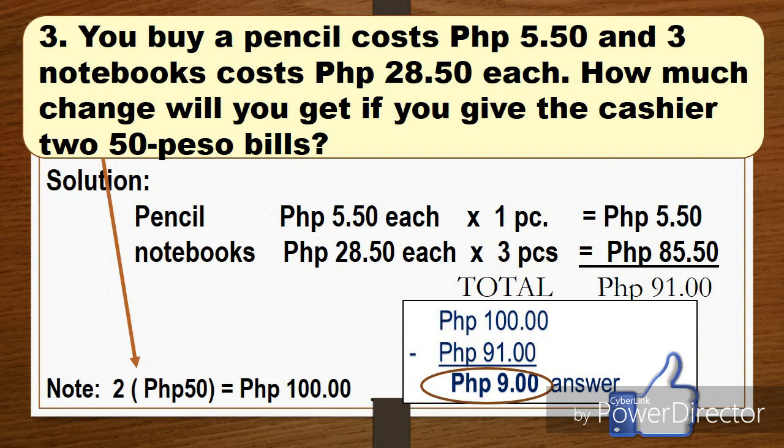Okay, next question. You buy a pencil costing 5 pesos and 50 centavos, and 3 notebooks costing 28 pesos and 50 centavos each. How much change will you get if you give the cashier two 50-peso bills? So note that you gave 2, 50 peso bills to the cashier. So we have 2 times 50 is equal to 100. So your money here is 100. Okay, so the question is, how much change will you get? So how much is your change?